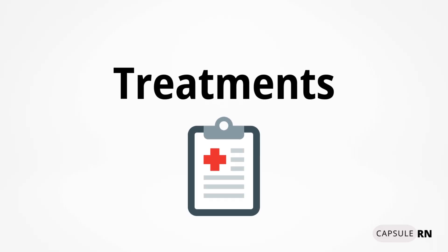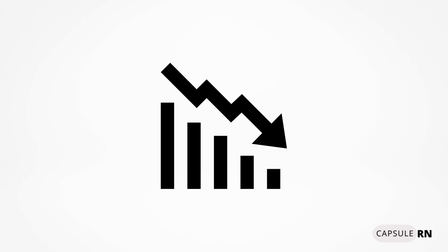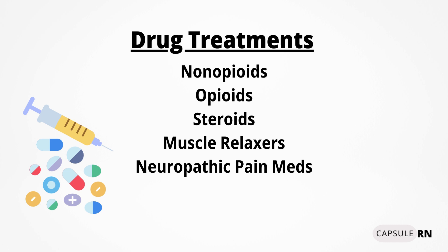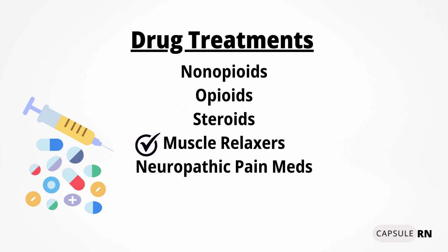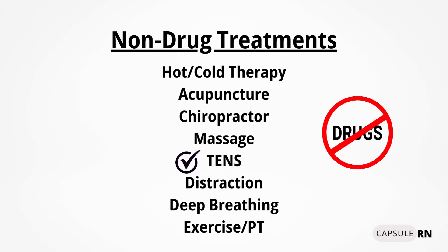Next, let's talk about treatments for pain. Treatment falls into two general categories: drug treatments and non-drug treatments. The goal of these treatments is to decrease and hopefully eliminate the patient's pain while also discovering and addressing the root cause of their pain. Drug treatments for pain include non-opioids like acetaminophen or ibuprofen, opioids like oxycodone, steroids like dexamethasone, muscle relaxers like cyclobenzaprine (also called Flexeril), or neuropathic pain medications like gabapentin. Non-drug treatments for pain include hot and cold therapy, acupuncture, chiropractic adjustments, massage, TENS (which uses a mild electric current to alleviate pain), distraction, deep breathing, and exercise or physical therapy.